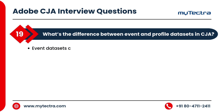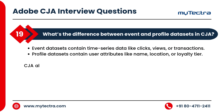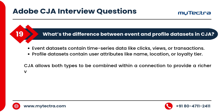What's the difference between event datasets and profile datasets in CJA? Event datasets contain time series data, like clicks, views, or transactions. Profile datasets contain user attributes, like name, location, or loyalty tier. CJA allows both types to be combined within a connection to provide a richer view of the customer journey and attributes.